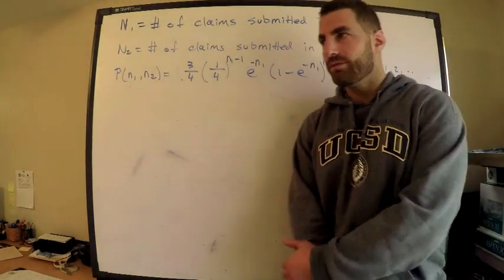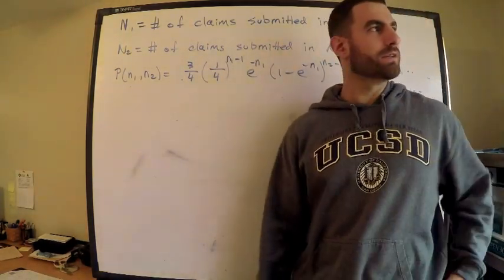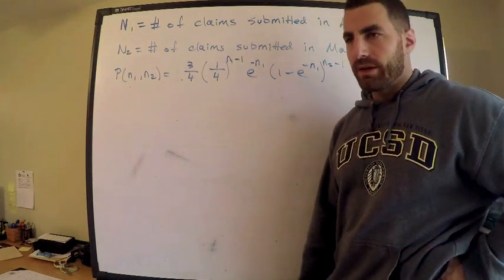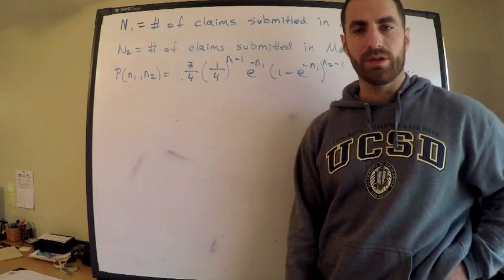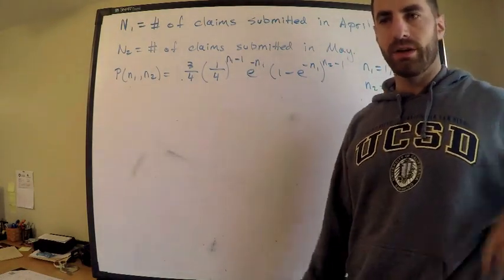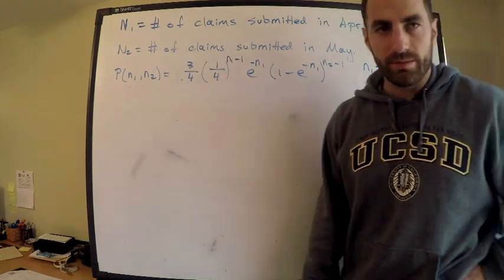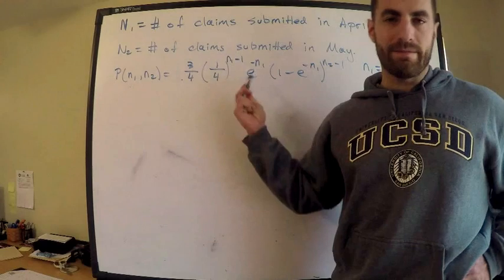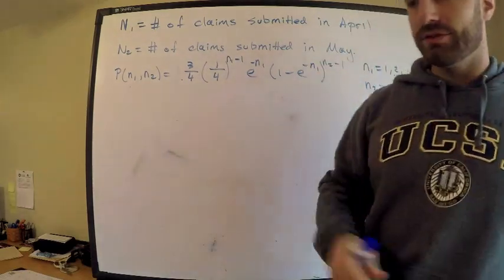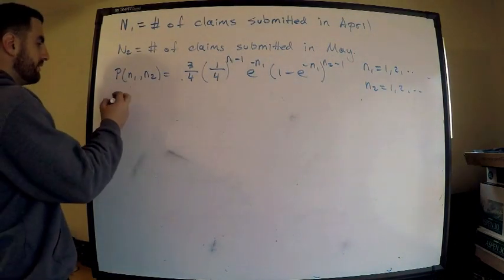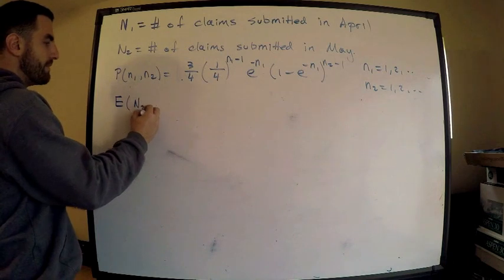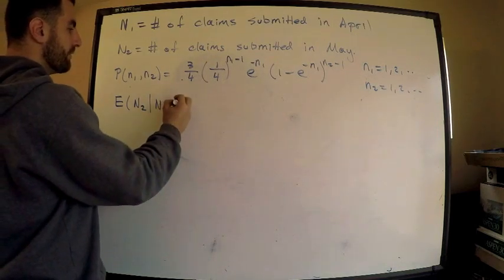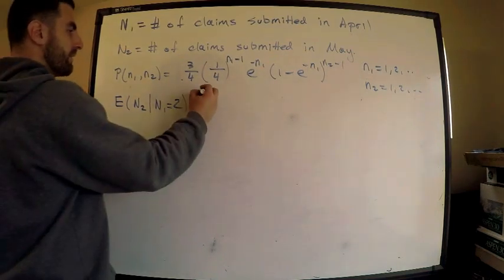I've been requested to make this video — this is question 131 from the SOA Exam P practice problems. We have two random variables, N1 and N2. N1 is the number of claims submitted in April, N2 is the number of claims submitted in May, and we're given the joint PMF. We want to find the expected number of claims submitted in May given that the number of claims submitted in April is two.